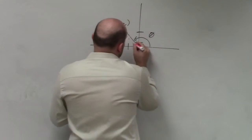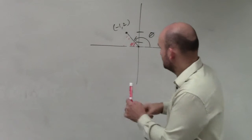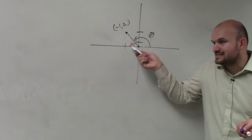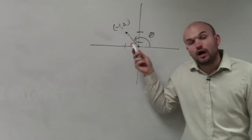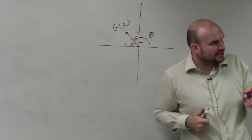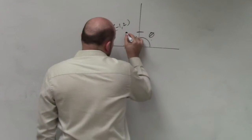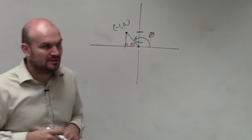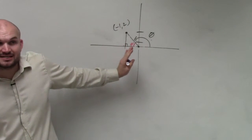So I'm just going to put theta prime here. If that's theta, then that's theta prime. Central angles are angles where the vertex is at the center, and you're always going to have them perpendicular to the x-axis. So to create a triangle, all you simply do from the coordinate point is draw a vertical line with the x-axis. What that does is create a right triangle. So now we're using the reference angle as our theta — we drew a perpendicular line to the axis, which creates a right triangle.